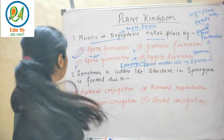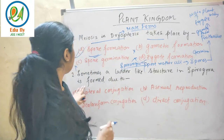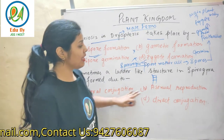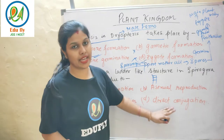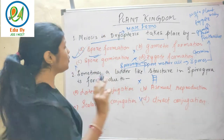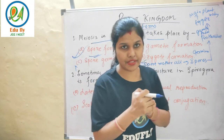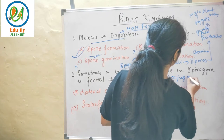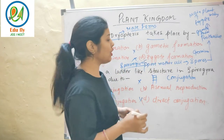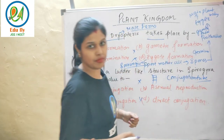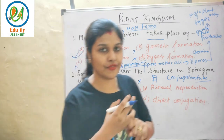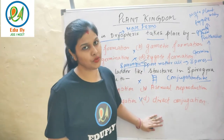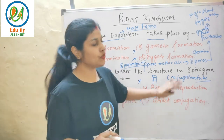Sometimes a ladder-like structure in Spirogyra is formed. Due to this ladder-like structure, conjugation occurs. There are two types: scalariform conjugation and lateral conjugation. Conjugation involves the exchange of genetic material between male and female gametes through a conjugation tube. According to Spirogyra, scalariform conjugation takes place.